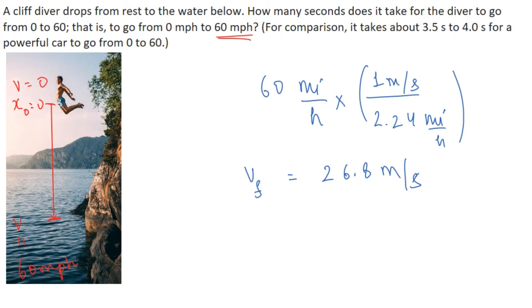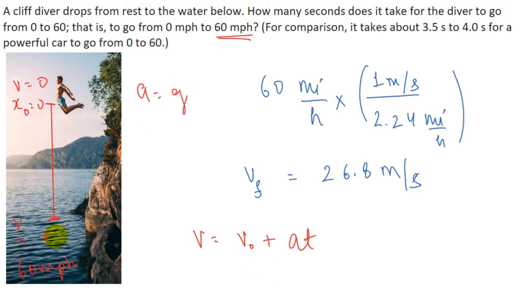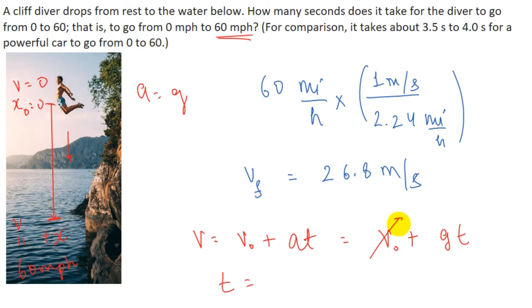To solve this problem we use the equation v = v₀ + at. Since acceleration equals g and g is in the positive x direction, we write v = v₀ + gt. Because the initial velocity v₀ is zero, we simplify to t = v / g.